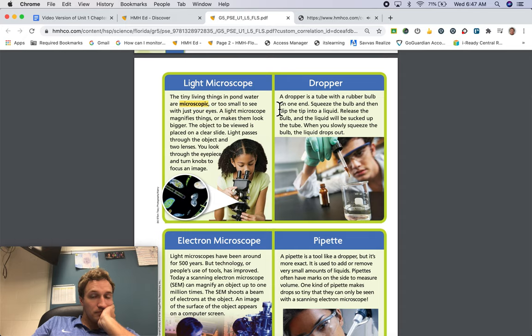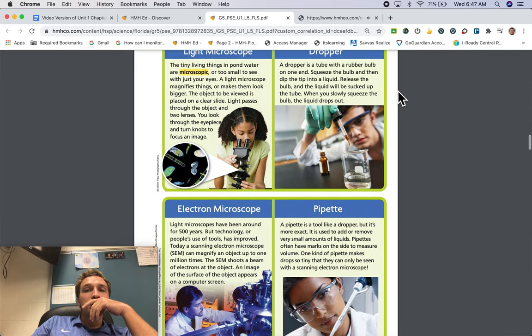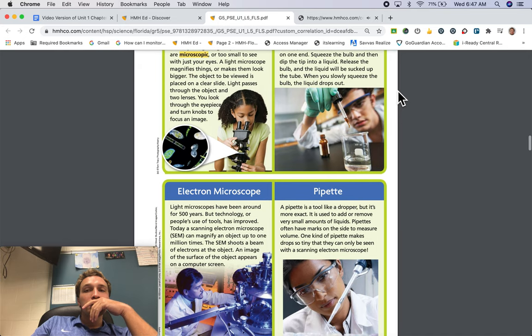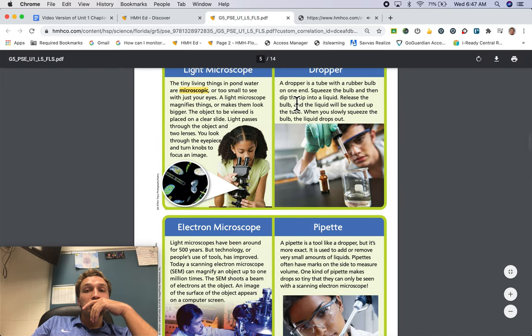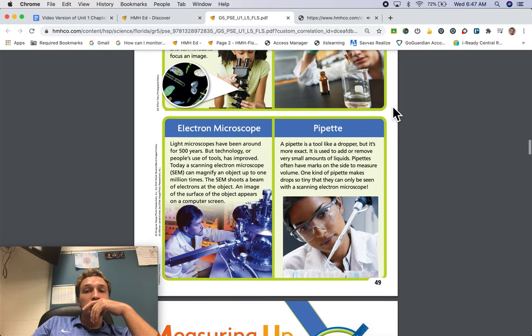Dropper. A dropper is a tube with a rubber bulb on one end. Squeeze the bulb and then dip the tip into a liquid. Release the bulb and the liquid will be sucked up the tube. When you slowly squeeze the bulb, the liquid drops out.